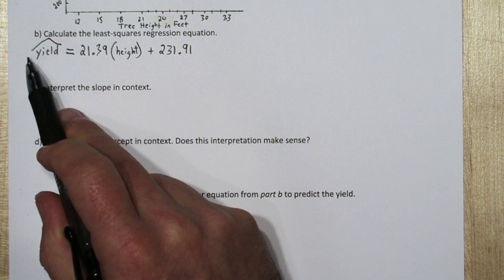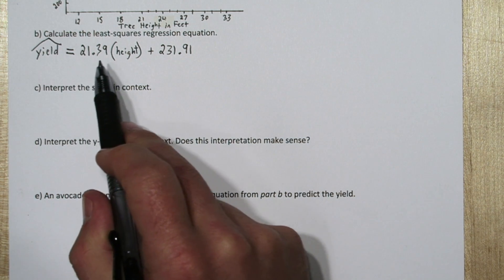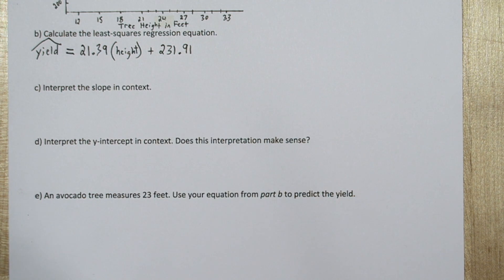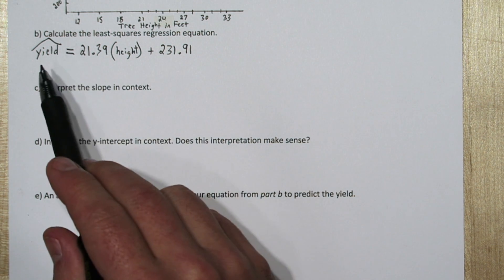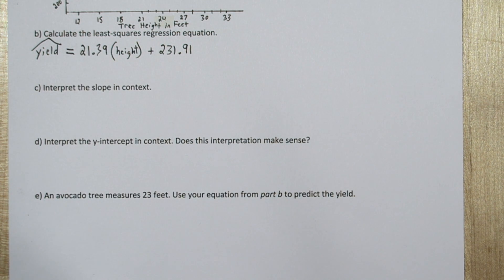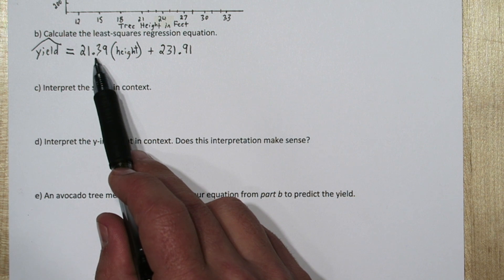So this is yield hat, it means predicted yield is 21.39 times height plus 231.91. By writing words here instead of variables, we keep everything in context.